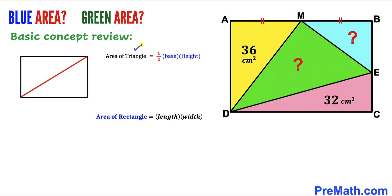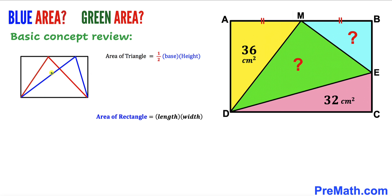Now let's recall the area of a triangle formula: area equals one half times base times height. So the area of a triangle formed by a diagonal is going to be half of the area of the rectangle. We can also observe that the area of the red triangle equals the area of the blue triangle, since both triangles have the same base and the same height.